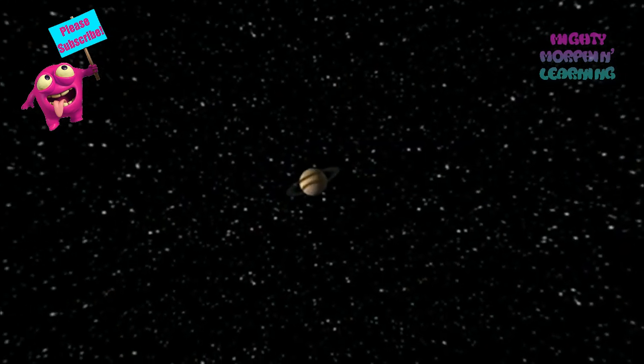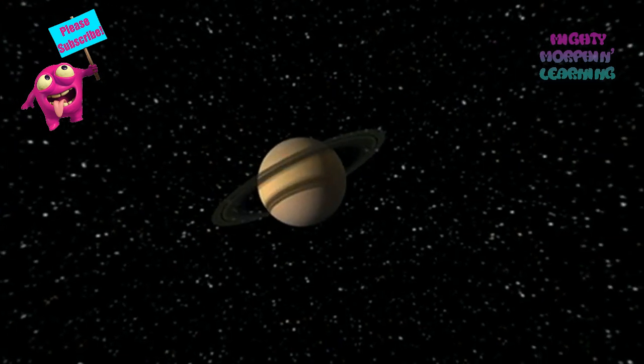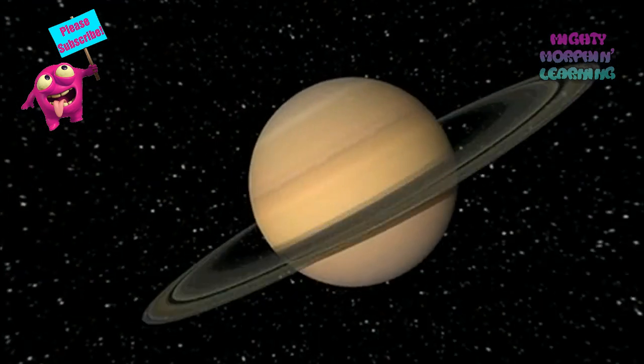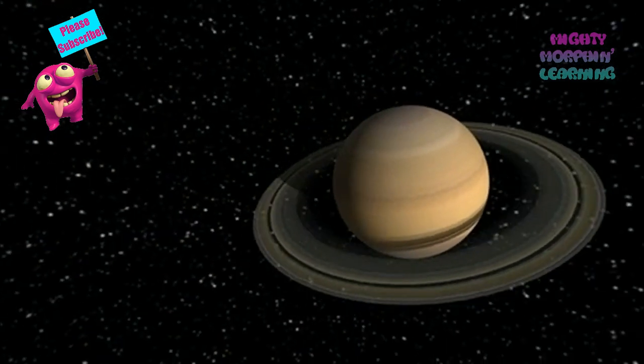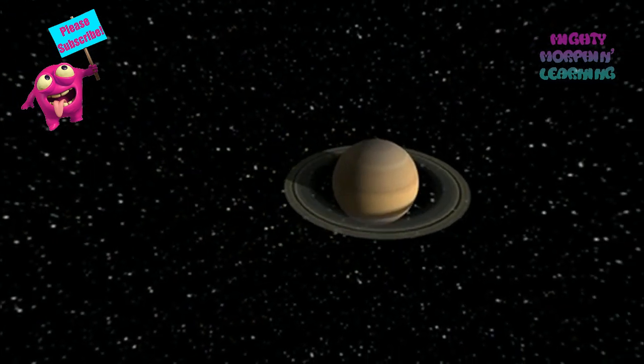The sixth planet from the sun, and the second largest is Saturn. Because it is less dense than water, Saturn would actually float if there was a body of water large enough to hold it.